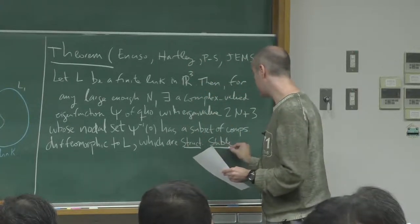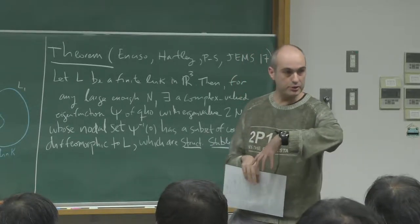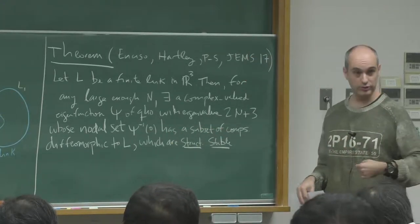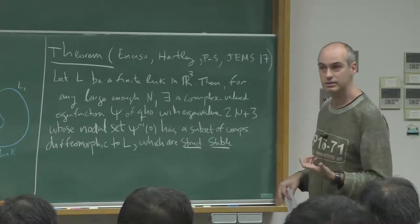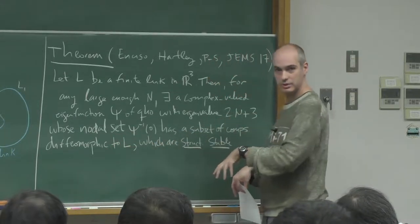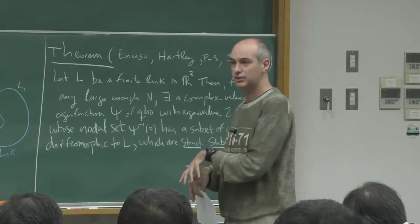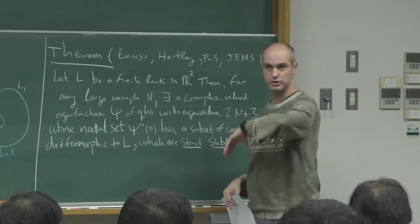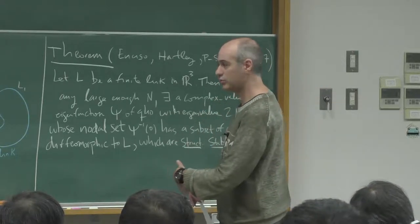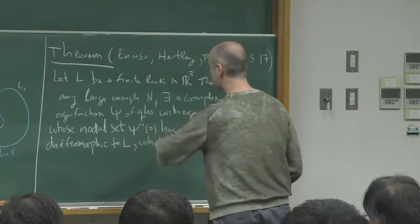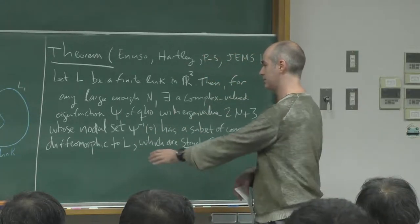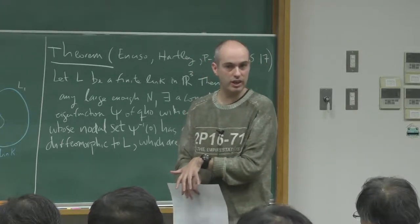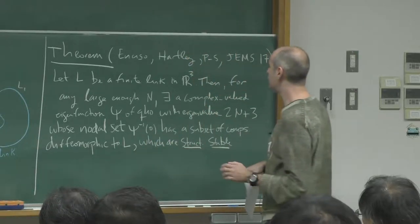By structurally stable, I mean that if I perturb this function slightly in the C¹ norm, then the perturbed function will still have components in the nodal set which are precisely the given link. It's an open condition. This is the theorem. What it says is that there is no restriction on the kind of link you can realize — we only require finitely many components.